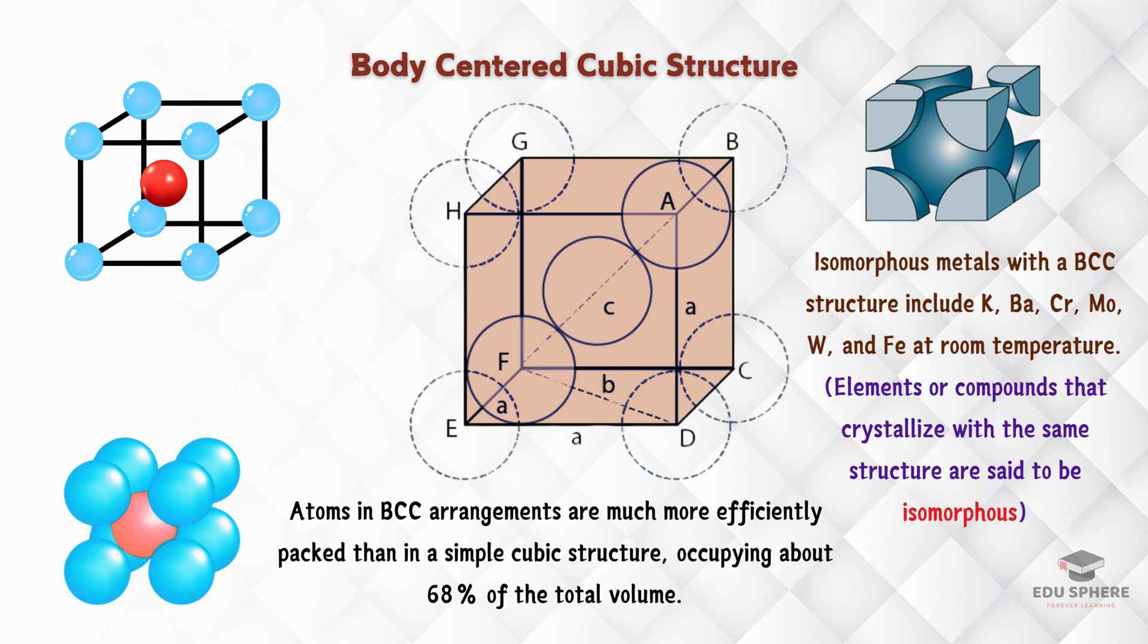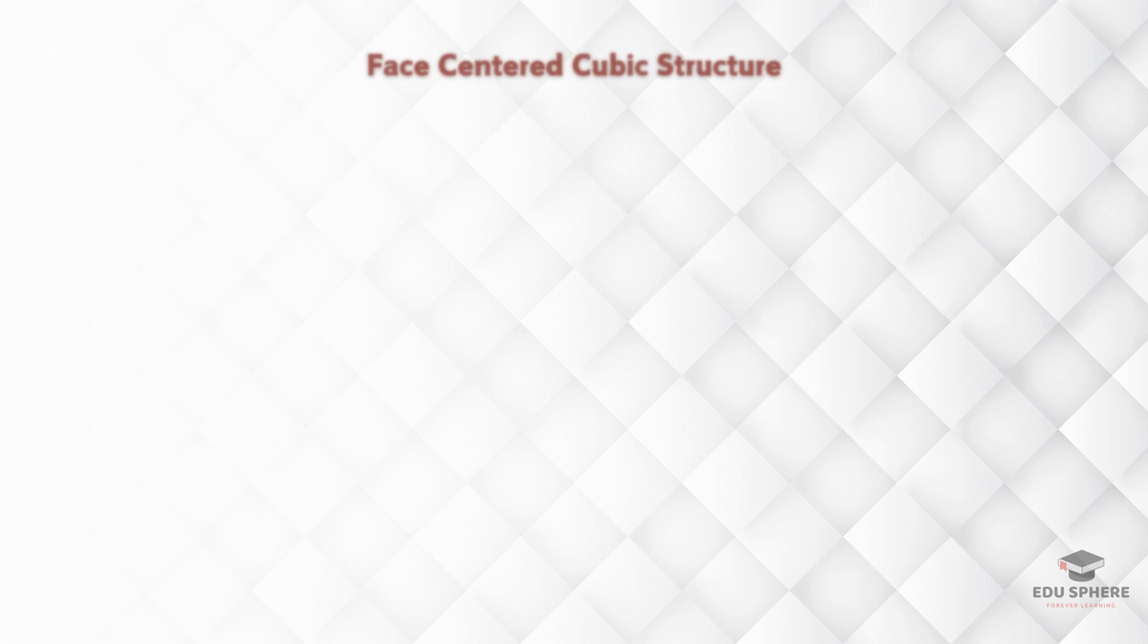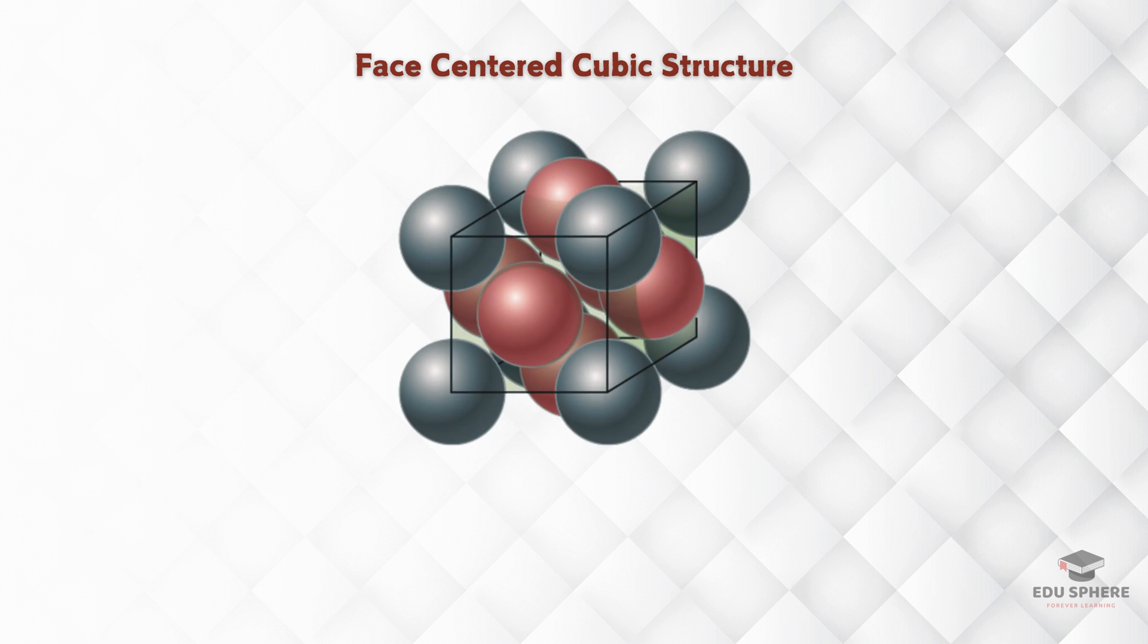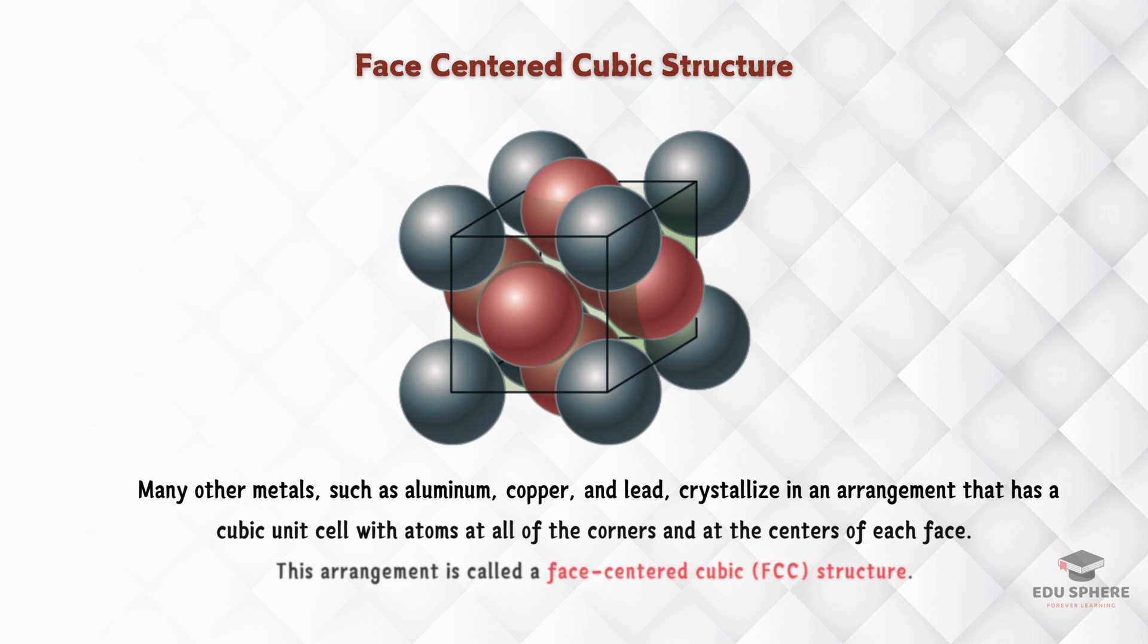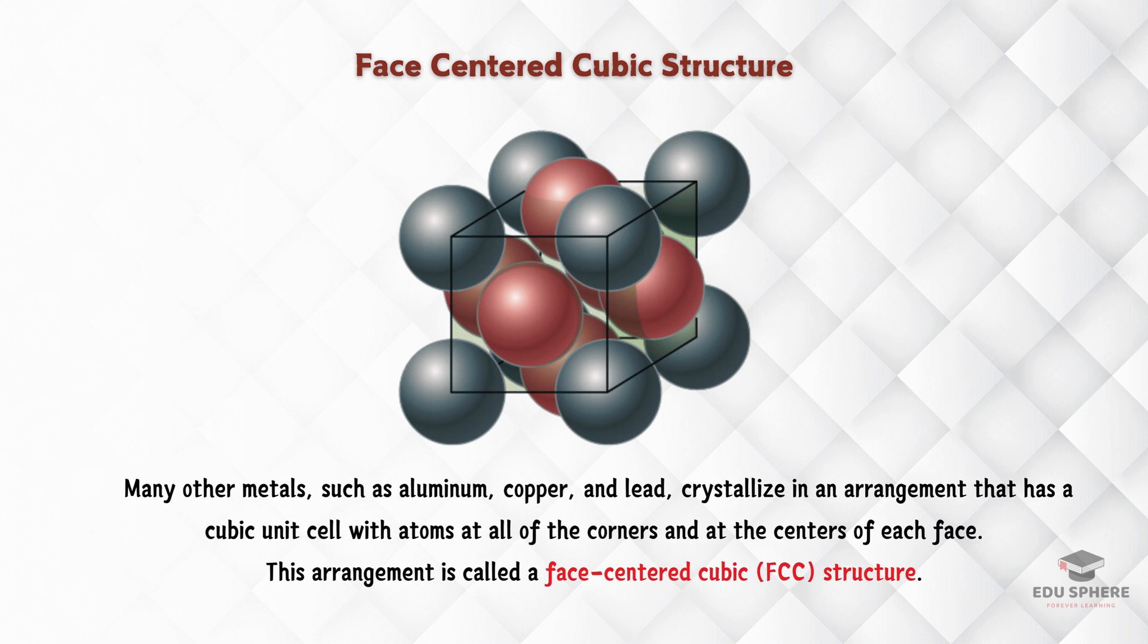Now, let's check out another way metals can pack their spheres: the face-centered cubic or FCC structure. Imagine taking our BCC unit cell and putting a sphere in the center of each face. That's the key difference in FCC. See how the corner spheres touch these new face-centered spheres diagonally.